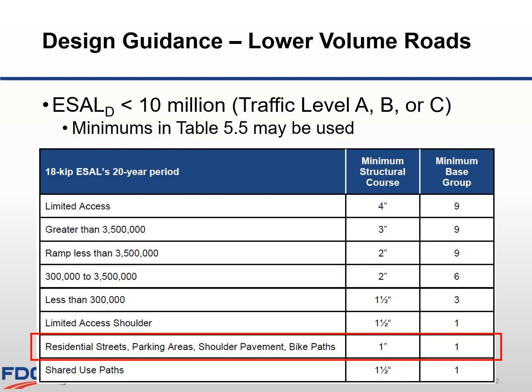A typical design would be 1.5 inches of FC 12.5, or 1 inch of FC 9.5 and Optional Base Group 1. Remember, FC 12.5 and FC 9.5 can be considered as a structural course. These values assume that a stabilized subgrade is used in conjunction with Optional Base Group 1.